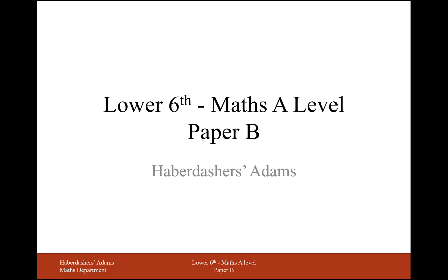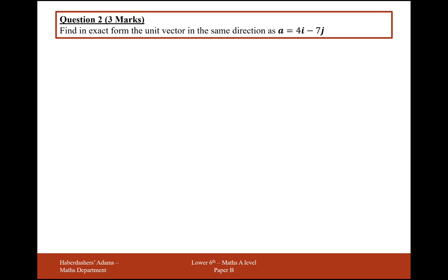Hello there, and welcome to Lower 6 Maths Tableau practice paper B. Here we're on question 2: find the exact unit vector in the same direction as 4i minus 7j.